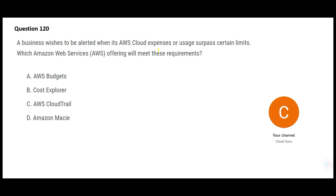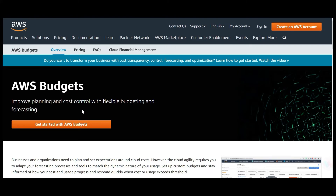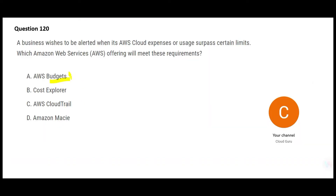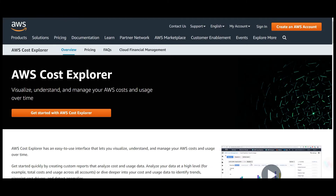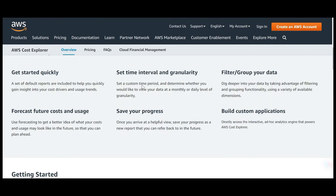The next question: if cloud expenses increase beyond a limit, you want to be notified. The answer is AWS Budgets. Just like at home you create a budget and get notified if it's exceeded, AWS Budgets is used for planning and cost control — you can set up flexible budgets and forecasting. Option B is Cost Explorer, which lets you visualize and manage costs over time and create reports, but it does not send alerts. So B is wrong.